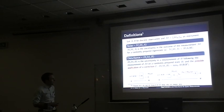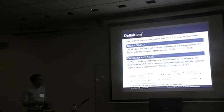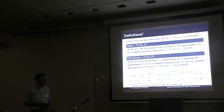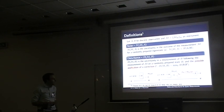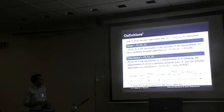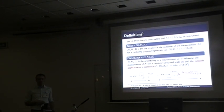We allow the possibility that one performs a correction — any CPTP map — before the subsequent projective measurement of B. This correction can depend on the outcome obtained. The disturbance is then defined as the minimal conditional entropy taken over all possible corrections one can apply.